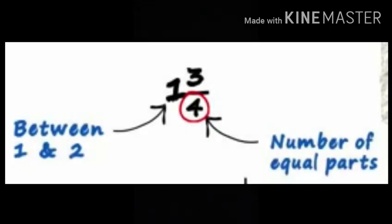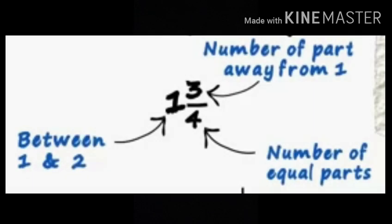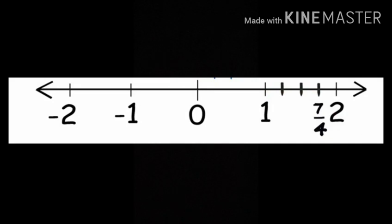Second number: Denominator of the fractional part tells us about the number of equal parts in which each division is to be divided. Numerator of fraction tells us about the number of parts we need to move away from 1. It is 3 parts away from 1. So we will write 7 upon 4 on the third point away from 1.